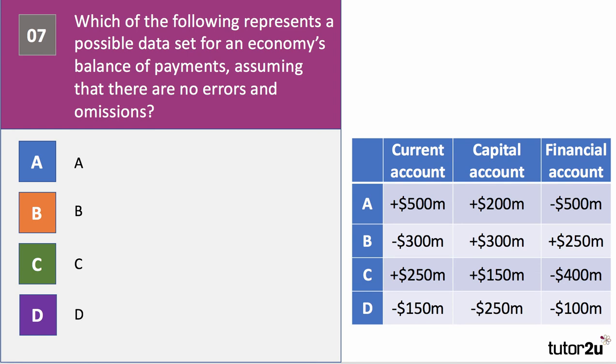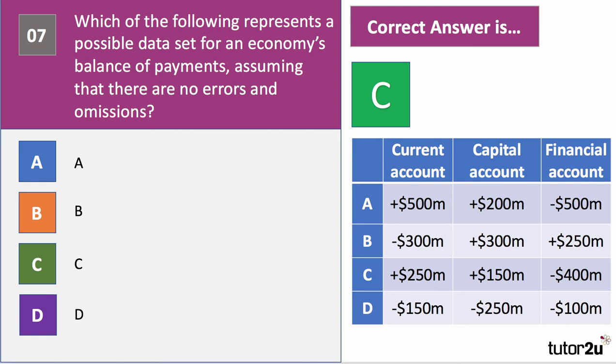Question seven: which of the following represents a possible data set for a country's balance of payments, assuming there are no errors and omissions? The balance of payments has to balance — the pluses and minuses must sum to zero. The right answer is C: current account surplus, capital account surplus, and financial account deficit — these sum to zero. The balance of payments must always balance.